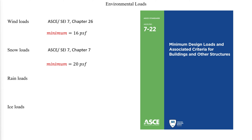An exterior stairway that incorporates sloping landings and stair treads will likely not need additional review for rain loads. However, certain situations — including landings with longer spans where beam deflection may be larger than drainage slope, platforms incorporating drains, or where ice dams are possible — should be reviewed to determine if rain loads should be considered. In these cases, refer to ASCE 7 Chapter 8.